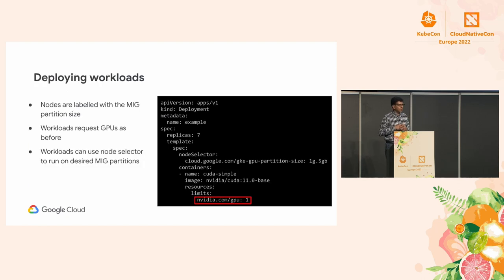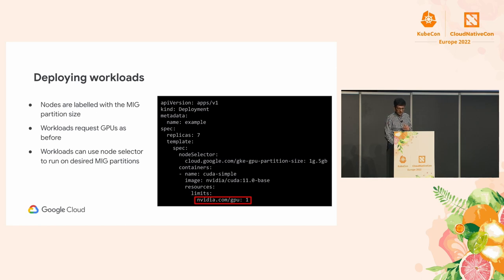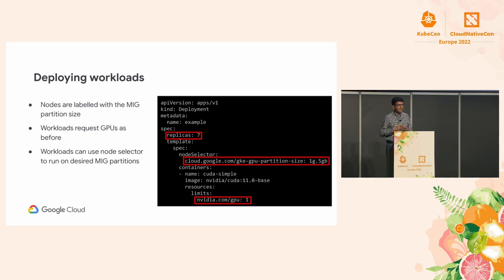Deploying workloads on MIG nodes is very similar to time sharing — you use a deployment spec and specify a resource count. With node selectors and labels, the scheduler figures out which workloads can land on which GPU slice. In this example, the replica count is seven because there are seven instances, allowing up to seven containers to run in parallel on a single A100 GPU partitioned into seven instances.